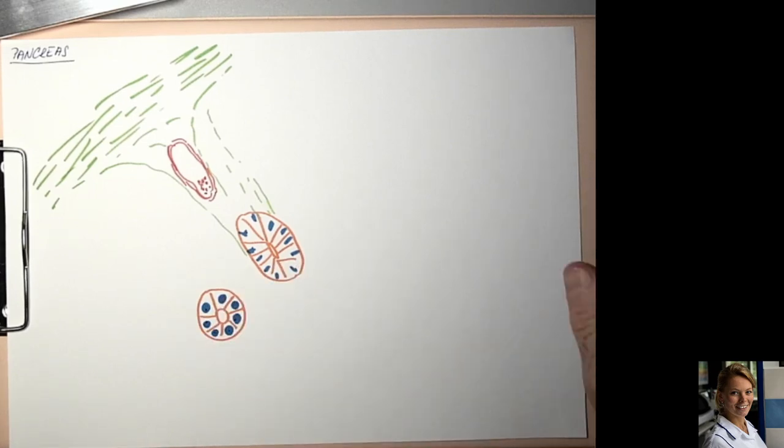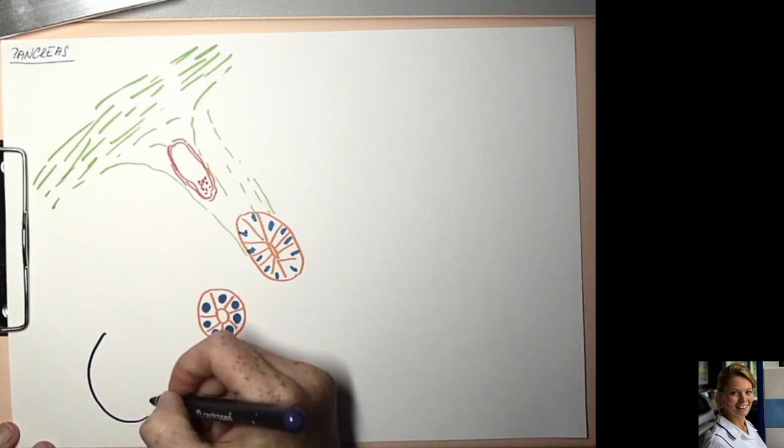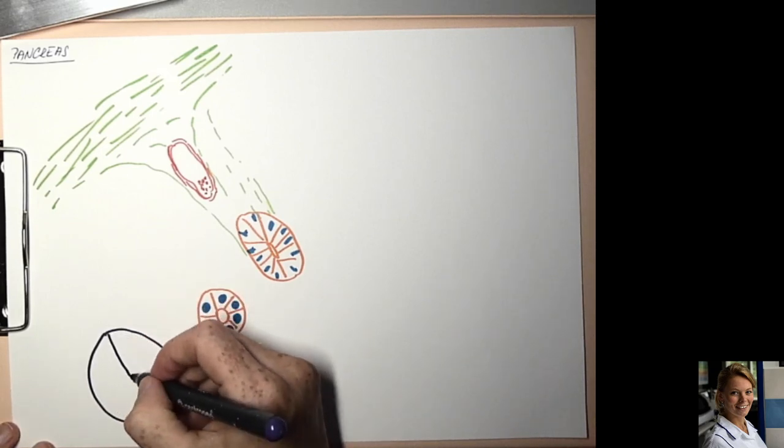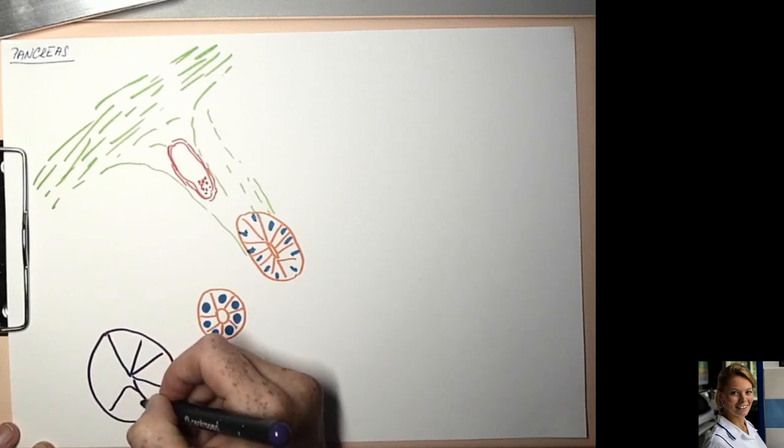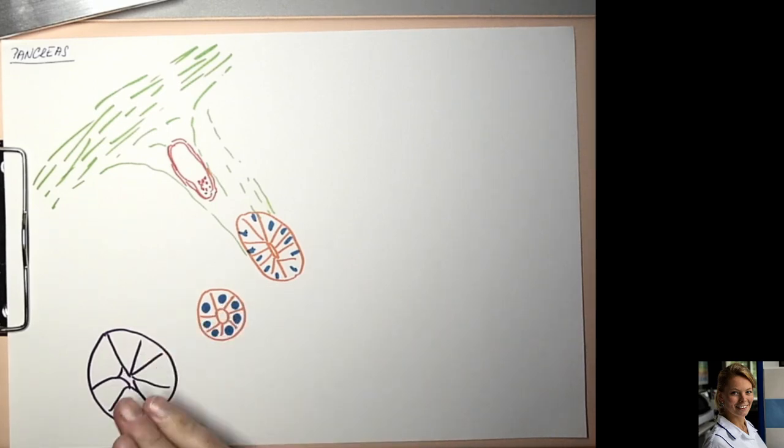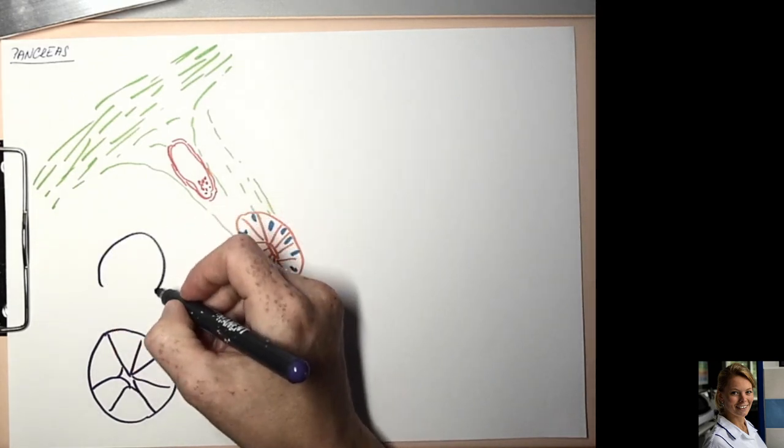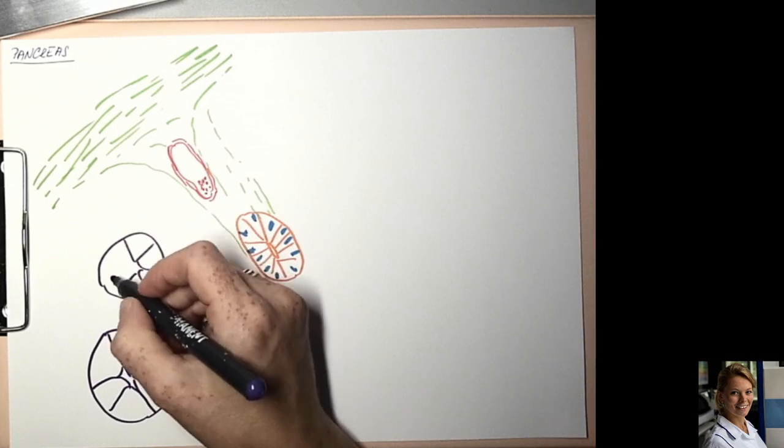Pancreatic acini are composed of acinar cells, which have pyramidal shape with a wide base and a narrow apical part, which faces the acinus, the lumen of acinus. This is another acinus.